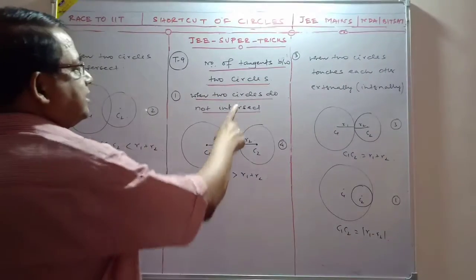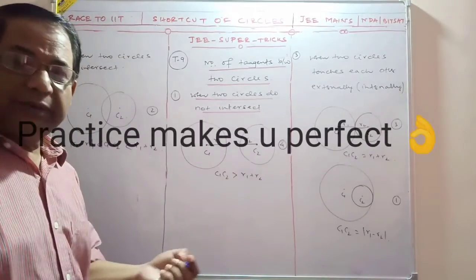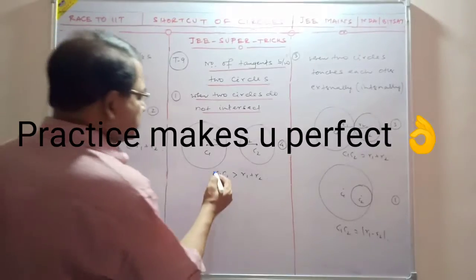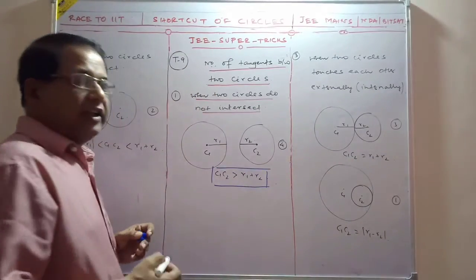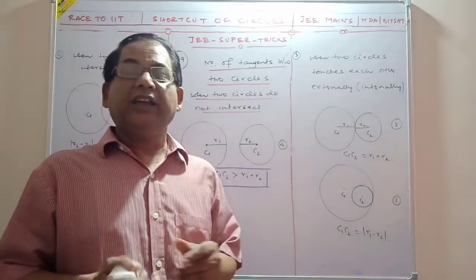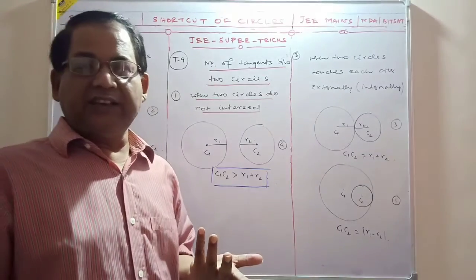Clear. When two circles do not intersect, this is one case. When two circles do not intersect, the conditions are the same.